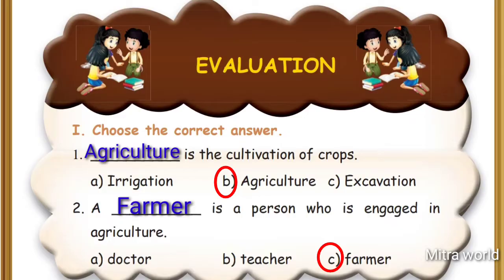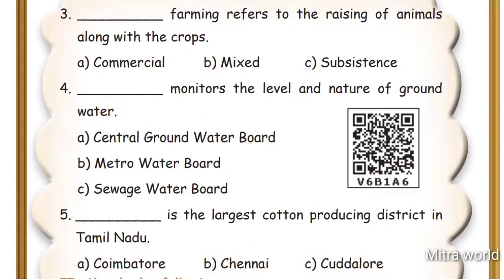Question 2: ___ is a person who is engaged in agriculture. Options are: Doctor, Teacher, Farmer. Answer: Option C - Farmer. Farmer is a person who is engaged in agriculture.